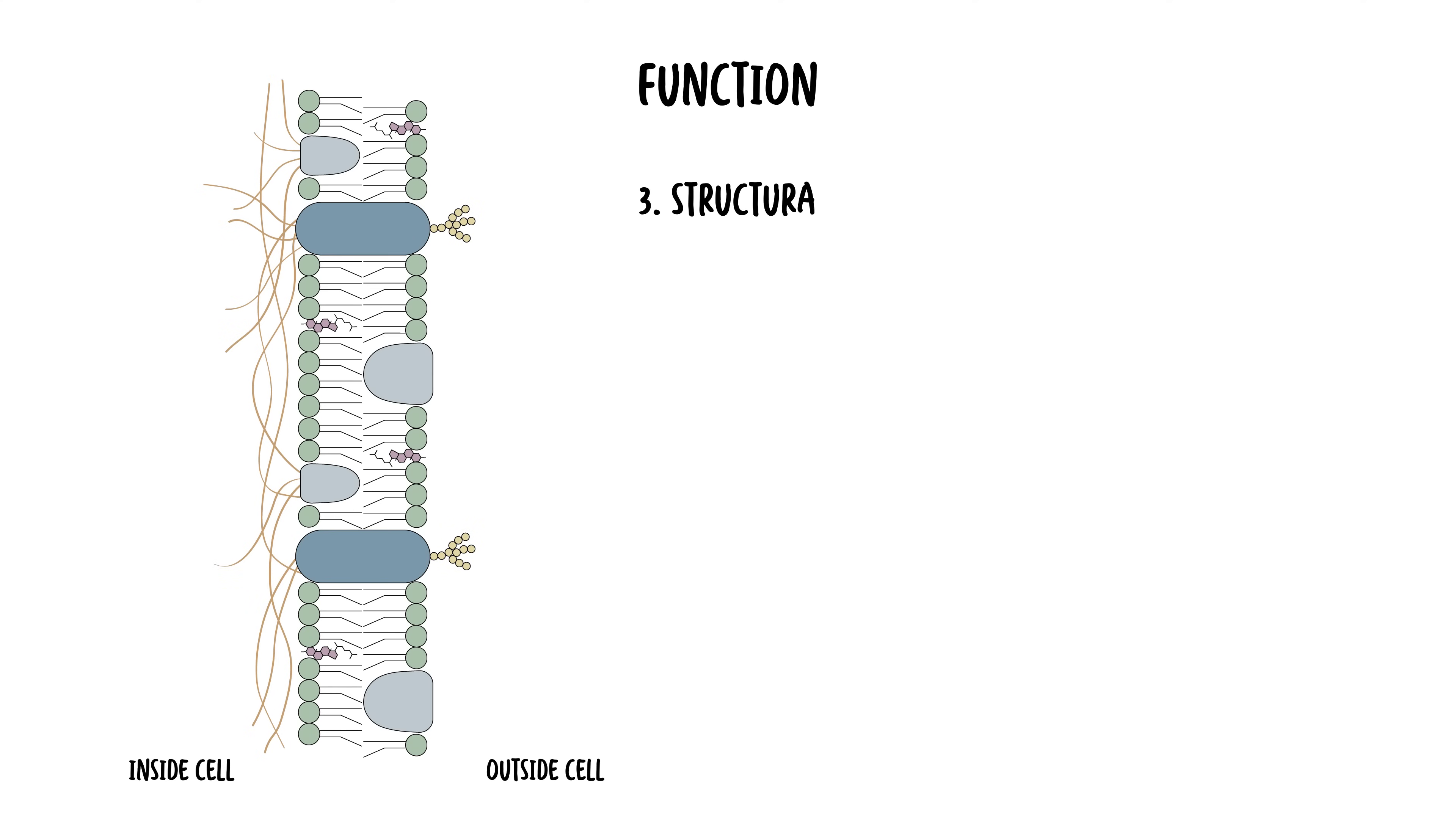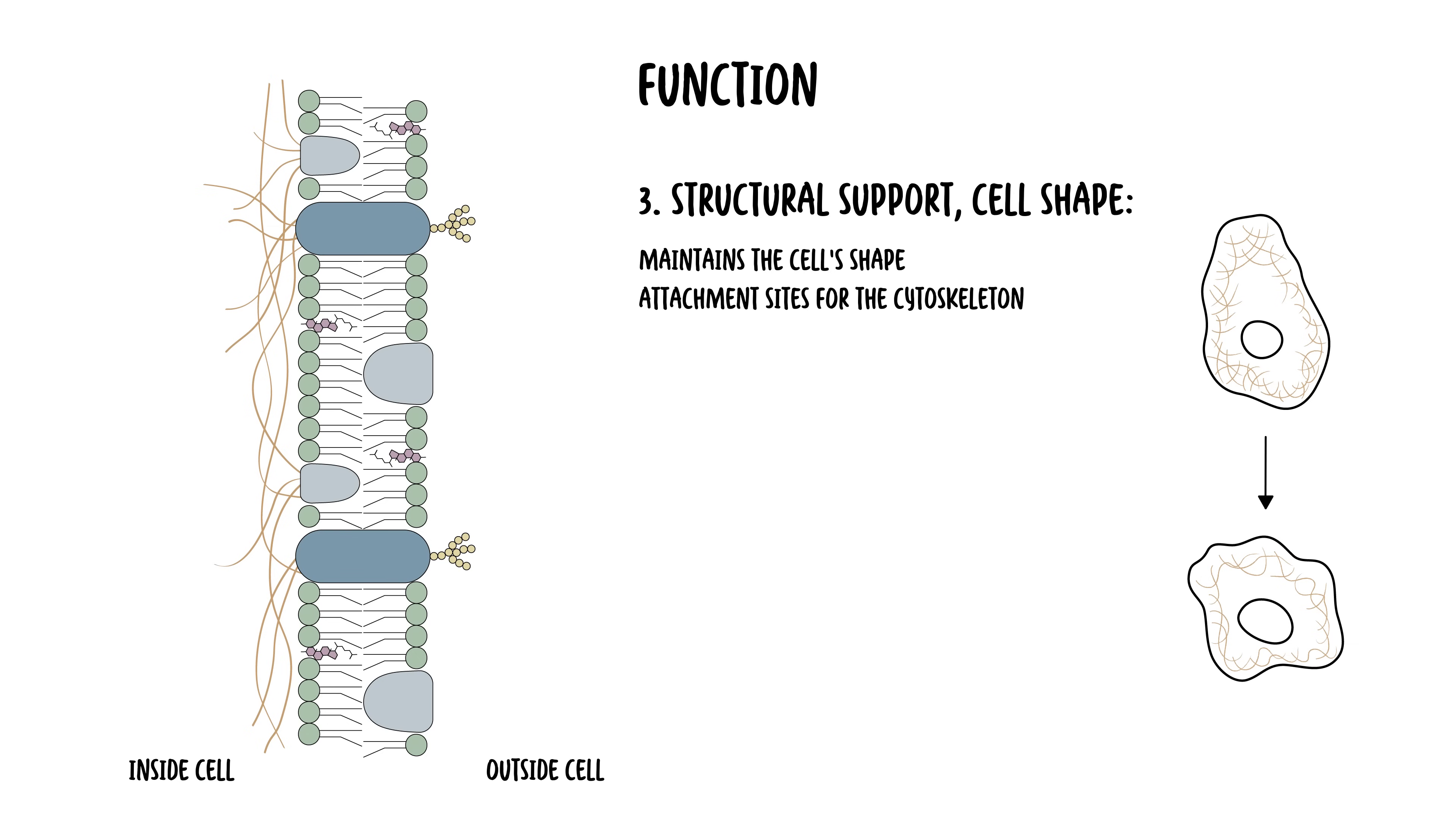Number three, the cell membrane also helps with structural support and cell shape. The membrane maintains the cell shape and provides attachment sites for the cytoskeleton. The cytoskeleton helps in maintaining structural integrity and facilitates movement within the cell, such as substances.